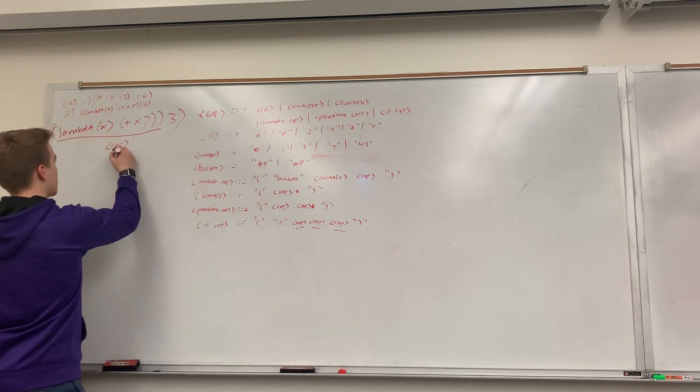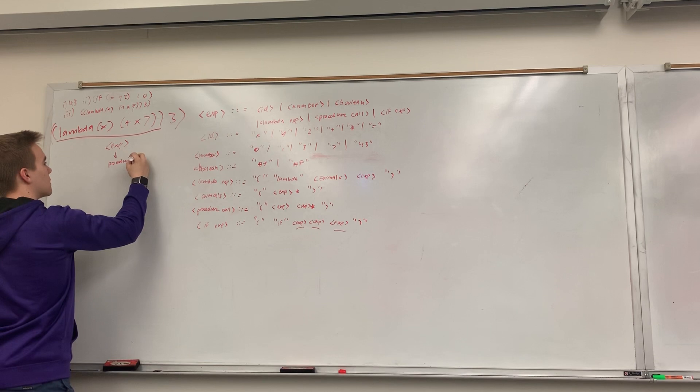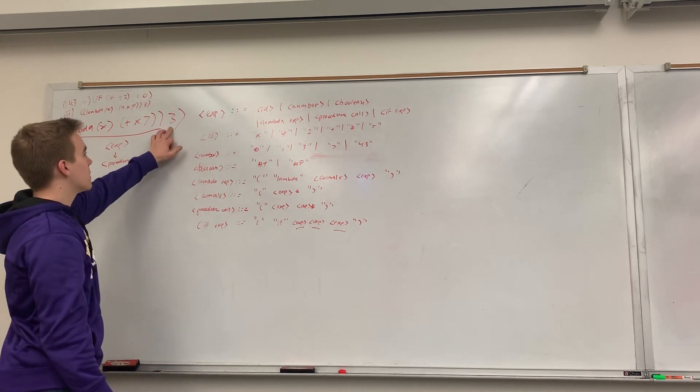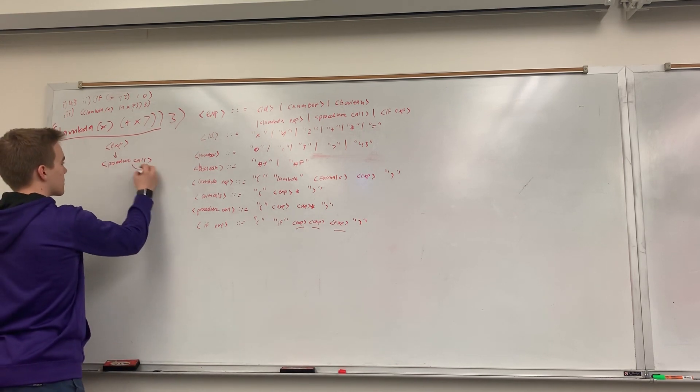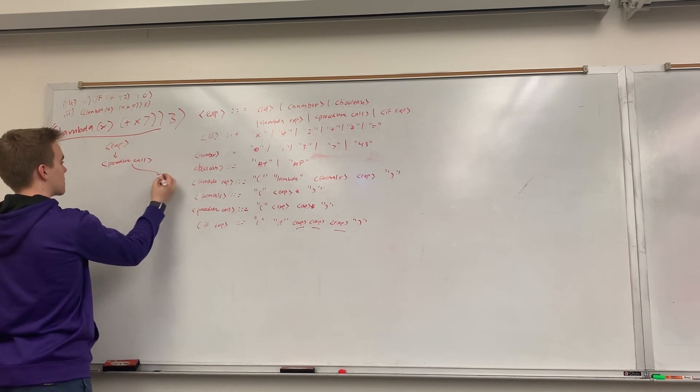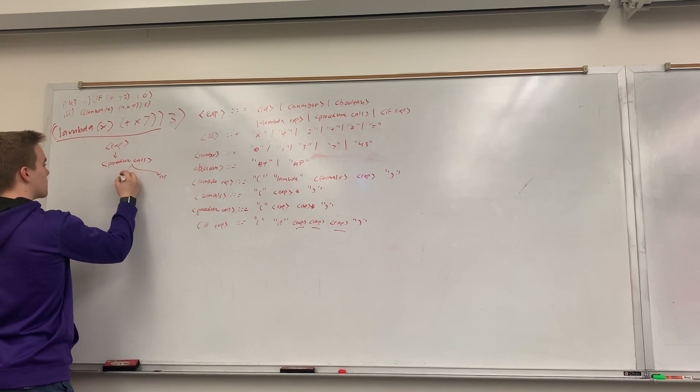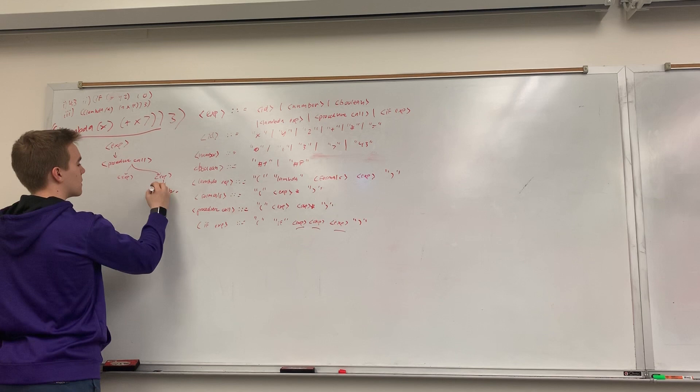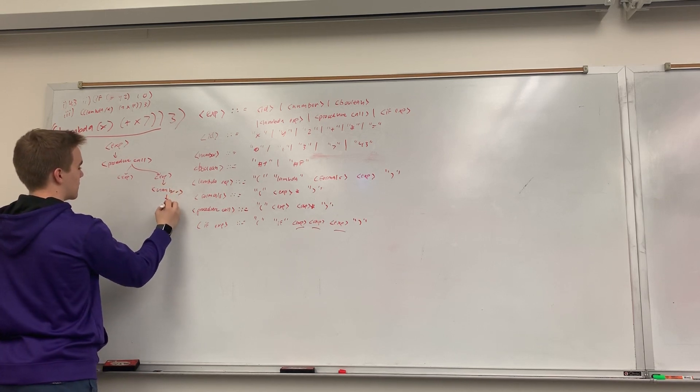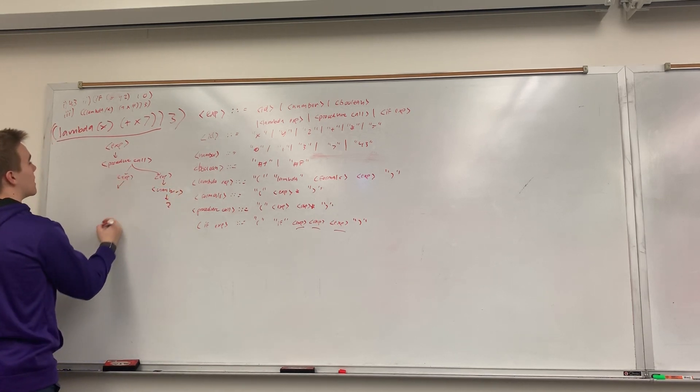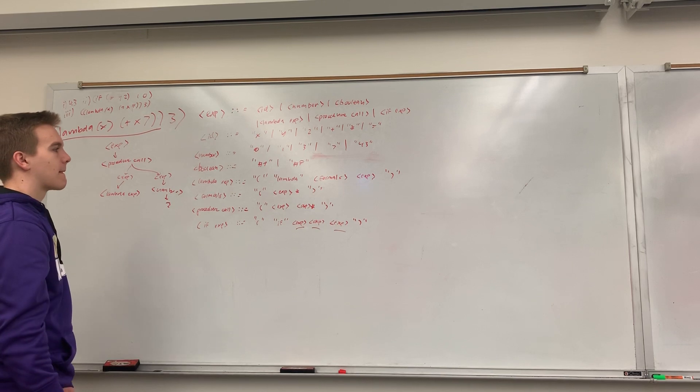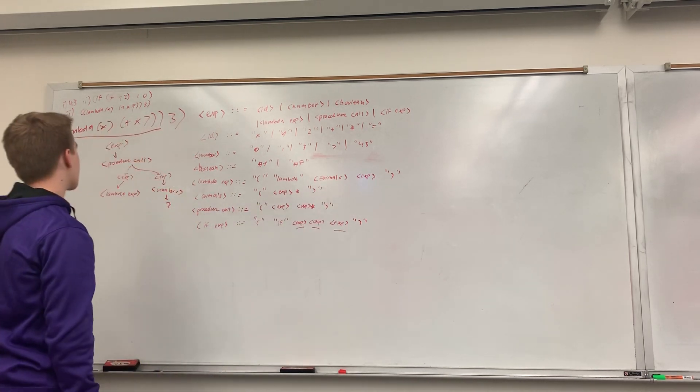So, this procedure call will have two expressions inside of it. One of them, which will be this three. One of them will be the lambda. So, this will call expression and expression. This expression will return number, or we'll go to number, or we'll go to three. This expression will be a lambda expression.